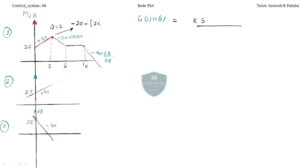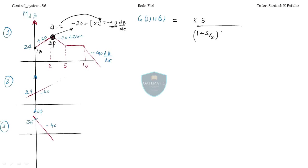How to find out the slope change: new slope minus earlier slope is minus 20 minus plus 20, which equals minus 40. It means at ω=2 you are getting minus 40 dB per decade slope change, which means you are getting exactly 2 poles at this point. You are also getting a single zero: (1 + s/2).